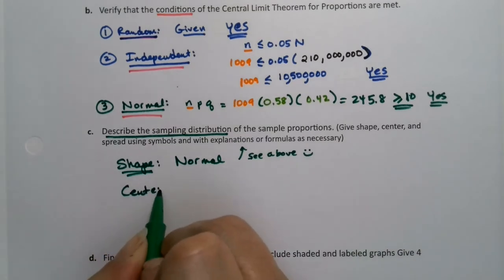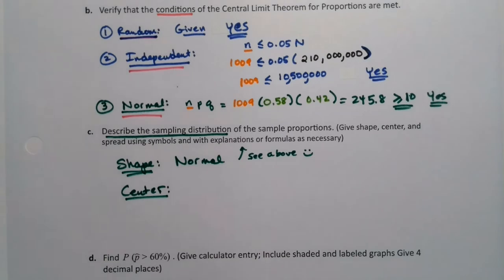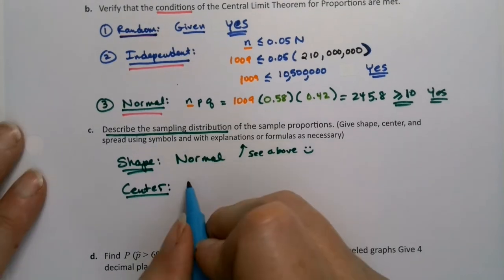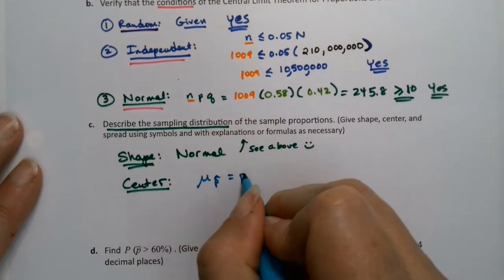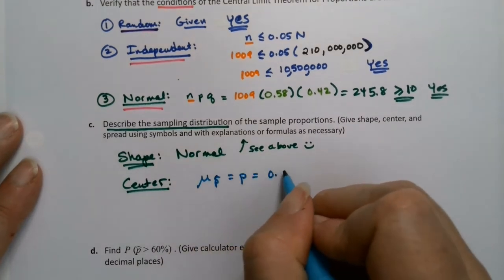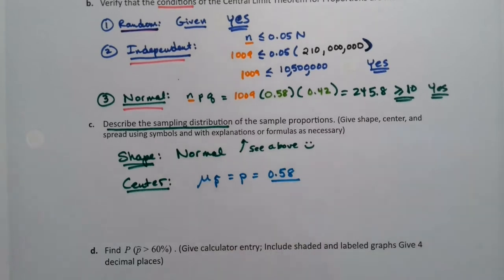All right. Center. Well, center is very easy, but you just have to get your symbols right. That's the part where people lose points. It's the mean of the p hats, which is p, which was 0.58. It was given to us.